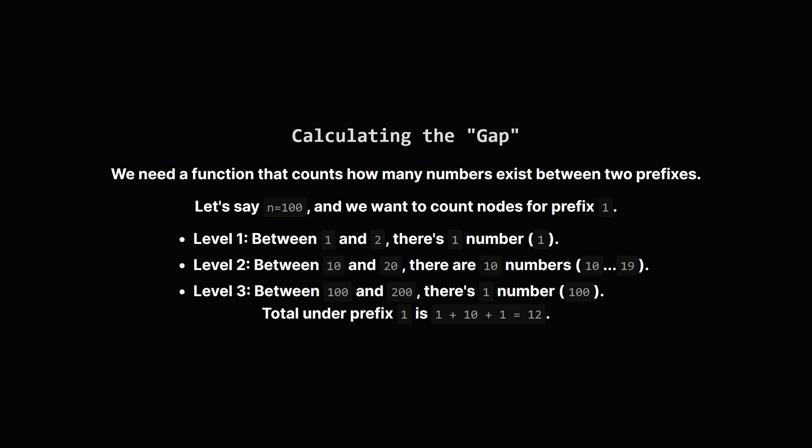So how do we calculate that count? Let's call it calculating the gap. Imagine our limit n is 100, and we want to count all numbers that start with the prefix 1. We can do this level by level. At the first level, between 1 and its sibling 2, we just have the number 1 itself. That's one number.